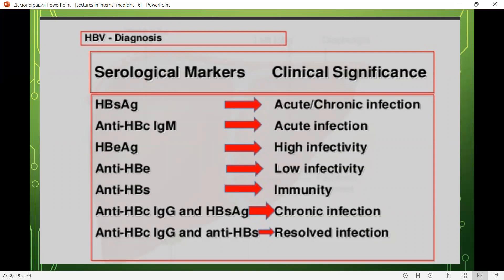Regarding serological markers and clinical significance: HBs antigen means acute or chronic infection; anti-HBs IgM indicates acute infection; HBe antigen indicates high infectivity; anti-HBe indicates low infectivity; anti-HBs indicates immunity; anti-HBs IgG and HBe antigen together indicate chronic infection; and anti-HBc IgG with anti-HBs indicates resolved infection.